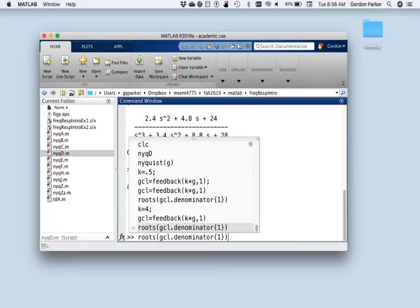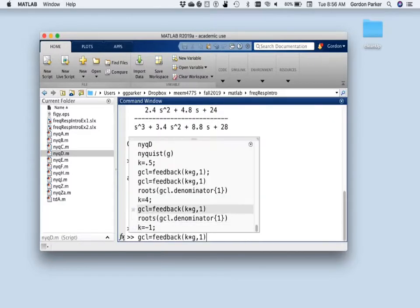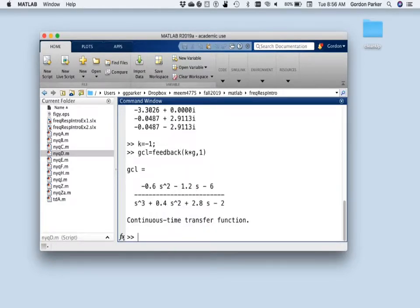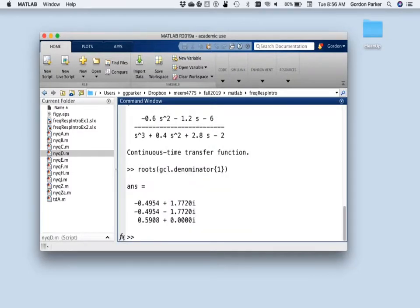So now let's look at K less than negative 0.67. And according to the analysis, it said that we should have one right-half-plane pole. So let's go less than negative 0.7. So I'm just going to go K equal negative 1. That's less than negative 0.67. And then we'll go here, and then we'll go there. Look at that. One right-half-plane pole. Exactly what the Nyquist analysis told us.